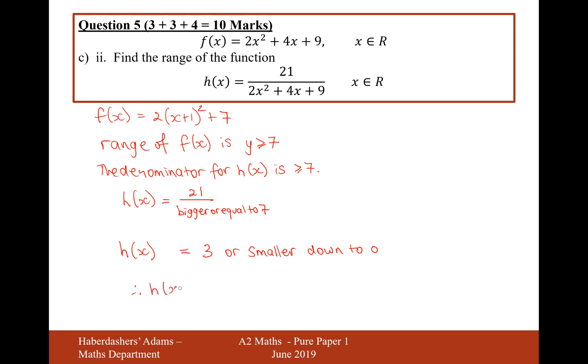Therefore, the range of h of x is going to be in between 0 to 3 including 3, because this range could equal 7 there. So it could be 3 exactly, and then as this denominator gets bigger, as this denominator here gets bigger, then the whole fraction will be tending towards 0. So there we are. So that's the range of the function h of x.